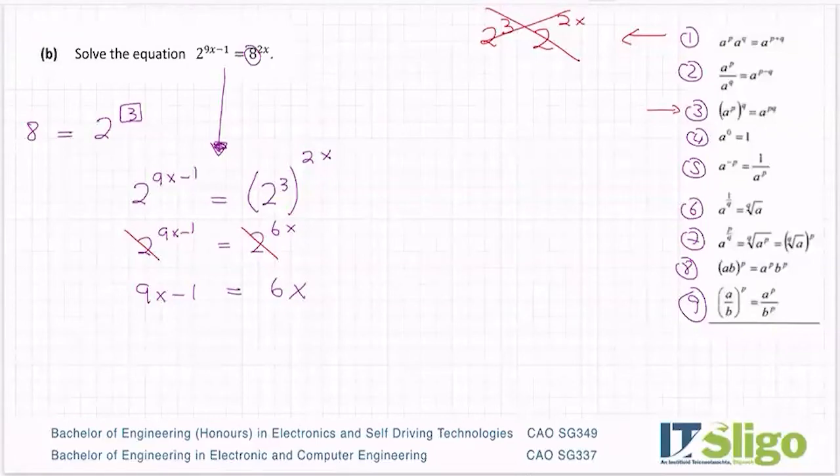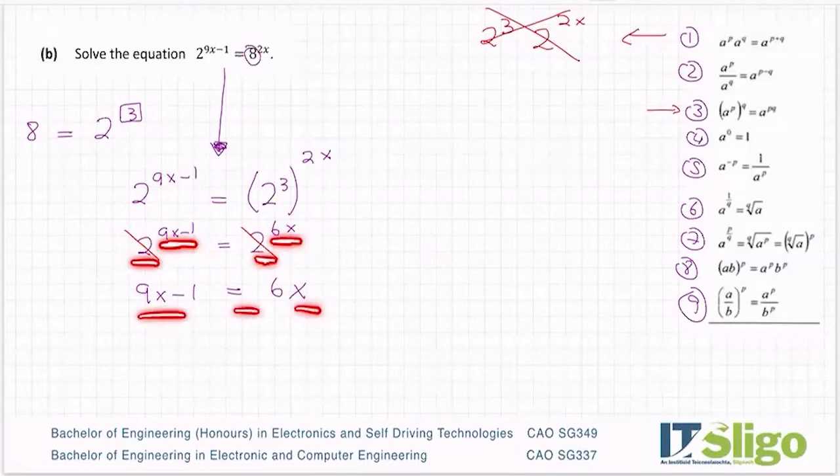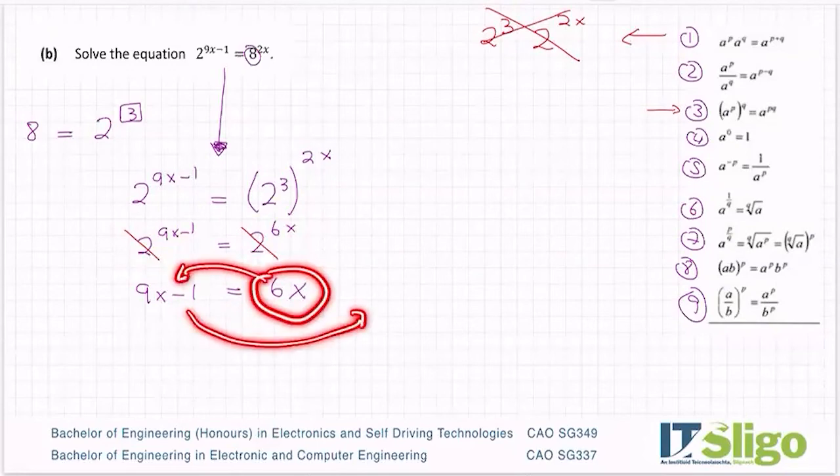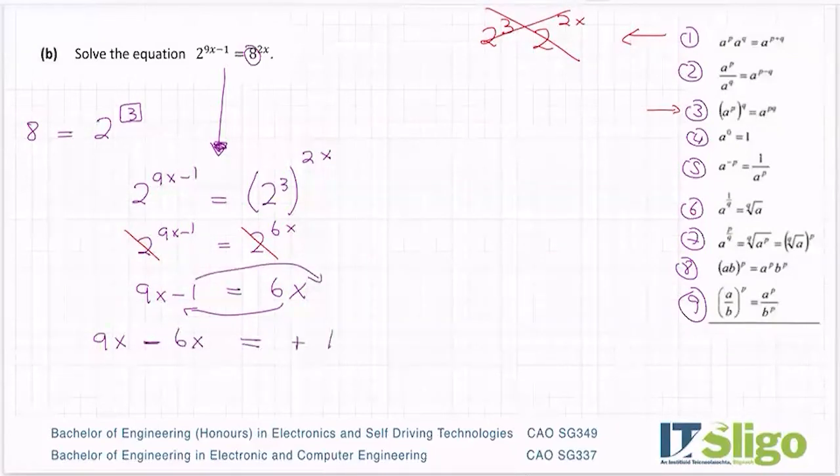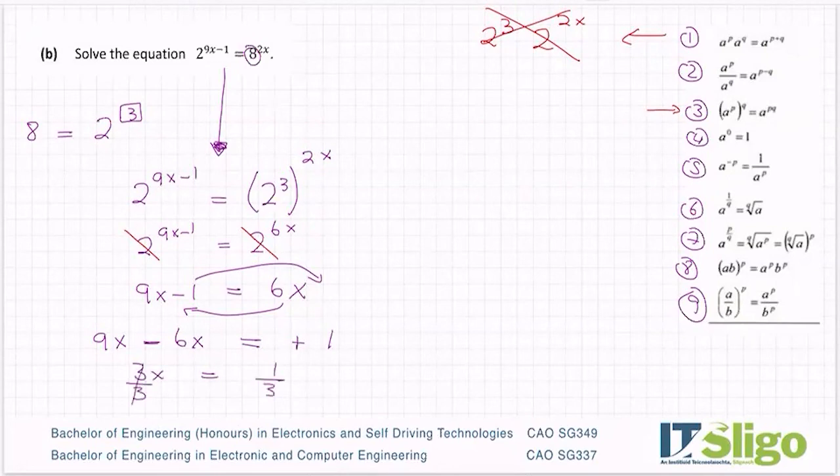Why? Because the only way that the left hand side could equal the right, the base numbers match. So therefore, the powers also have to match. They also have to equal. And just like any other algebra, I'm going to bring x's to the left and I'm going to bring numbers to the right. So he's going to become 9x minus 6x on the left of the equals sign. And the minus one is going to become over and it's going to be plus one. So 9x minus 6x is 3x equal to one. Divide by the number in front of x. I'm getting x is equal to a third.